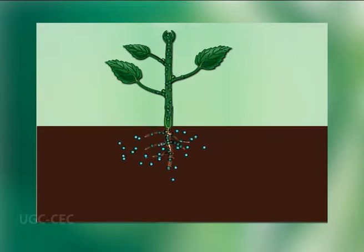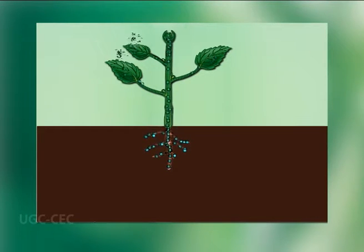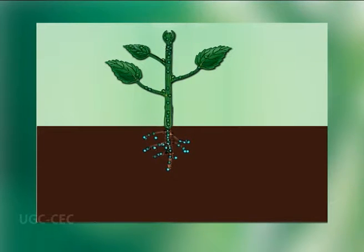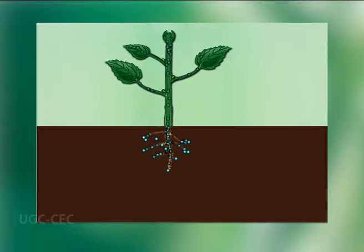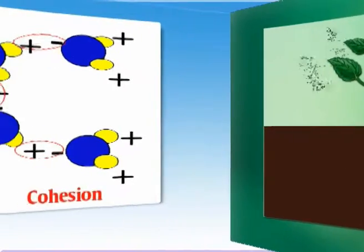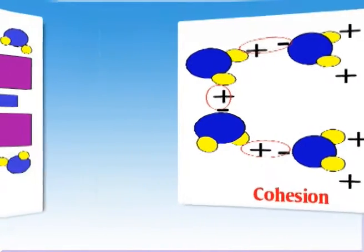From this discussion it becomes evident that the cohesion-tension theory explains the proper mechanism of ascent of sap. The essential features of the theory are: first, the unbreakable column of water inside the xylem elements; second, the driving force or pulling force is generated as a result of transpiration from the mesophyll cell surfaces, putting the water column inside the plant under tension; and third, the continuum of the water column is maintained as a result of cohesive and adhesive properties of water.